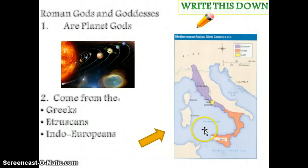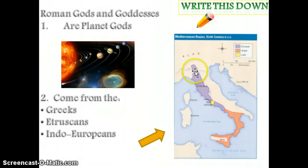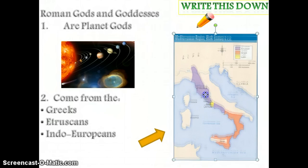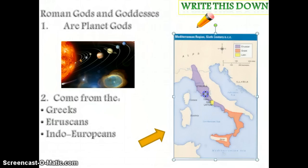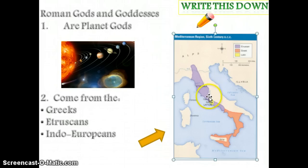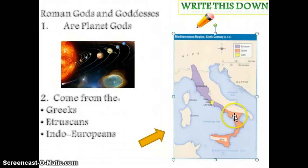Here we see the Etruscans, who we talked about in class the other day. We see the Latins in this little yellow spot, and then down here are Greek colonies. So it makes sense that the Romans were influenced by all three.